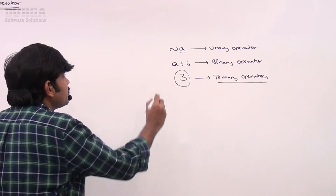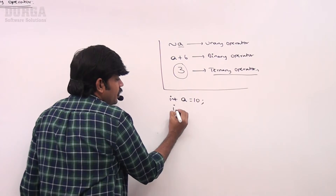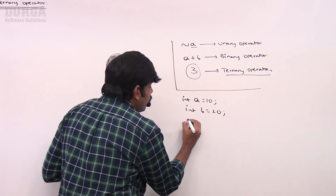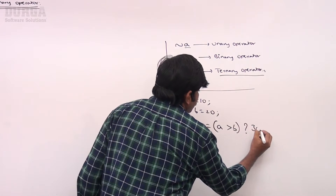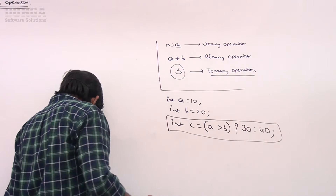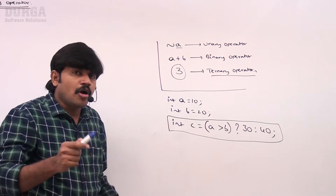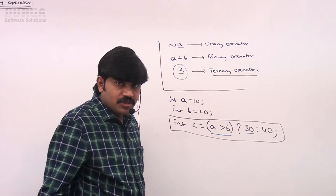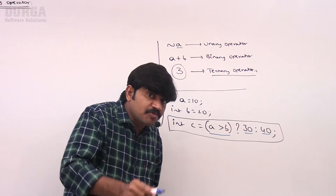For those coming from a Java, C, or C++ background, the syntax is: suppose int a = 10, int b = 20. Then int c = a > b ? 30 : 40. This is the ternary operator syntax in C, C++, and Java. Here, the first operand is the condition — if it's true, 30 is considered; if false, 40 is considered.